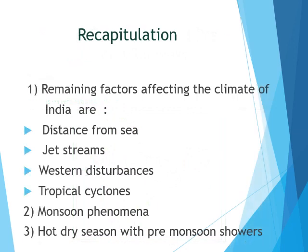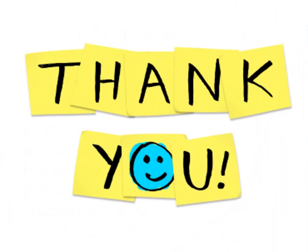Let's recapitulate what we have done today: the remaining factors which affect the climate of India, including distance from the sea, jet streams, western disturbances, tropical cyclones, monsoon phenomena, and the hot and dry season with pre-monsoon showers. Thank you and have a good day. See you in the next episode.